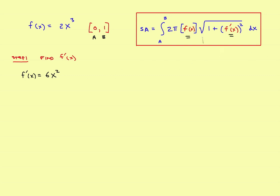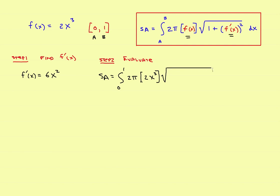Step two: evaluate the formula. When you plug it in, the surface area equals the integral from 0 to 1 of 2π times 2x³ times the square root of 1 plus (6x²)² dx. The original function 2x³ goes in for the average radius, and the derivative 6x² goes inside the square root.